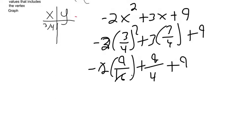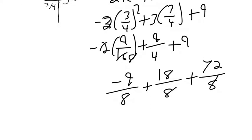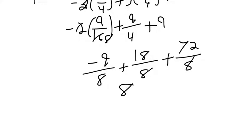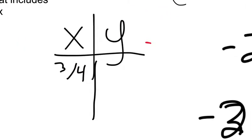And so when you do your fraction arithmetic out here, the negative 2 can cross simplify and make 8 on the bottom. So you get negative 9 over 8 plus 18 over 8 plus 72 over 8. So final answer for y is 81 over 8, which is roughly 10.125. So the vertex is 3 fourths and then 81 over 8.